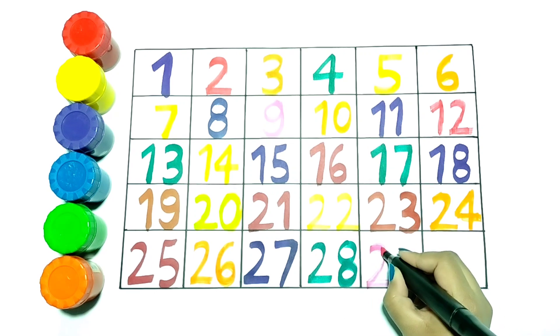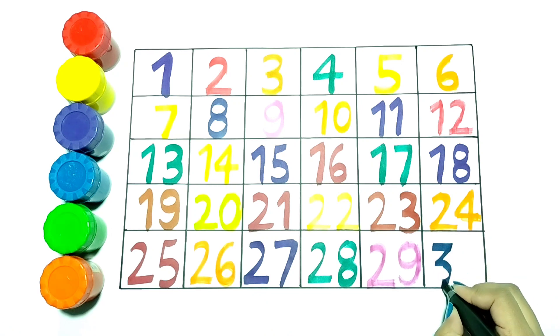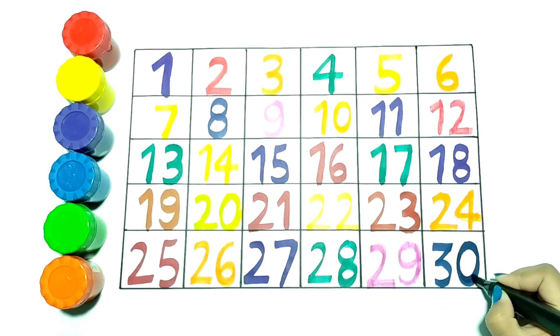Now I am writing 29 with pink color. And this is 30. It is in purple color.